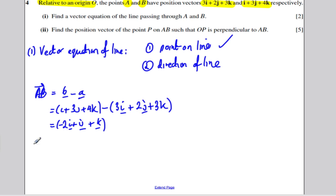So the vector equation of the line R is the point A, which is 3I plus 2J plus 3K plus a multiple, and I'll call that multiple lambda, of the direction between A and B. So minus 2I plus J plus K.